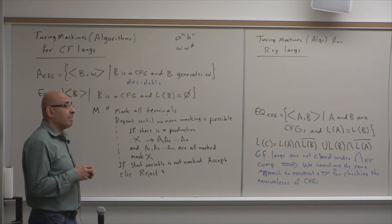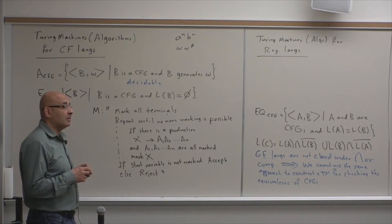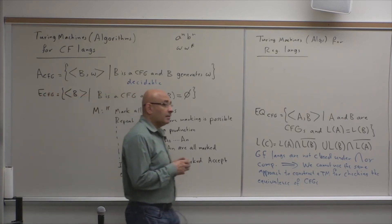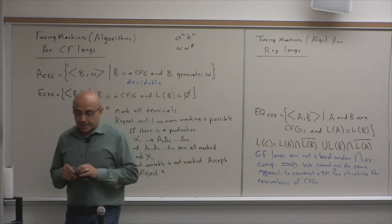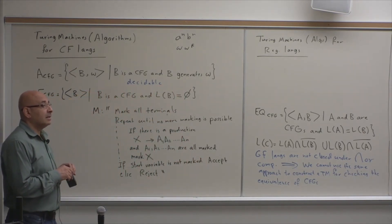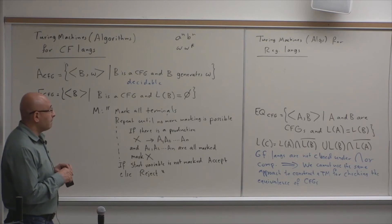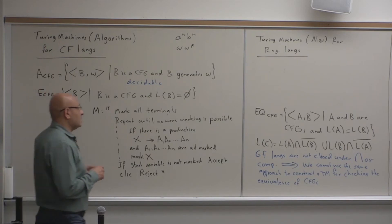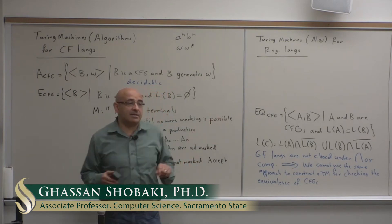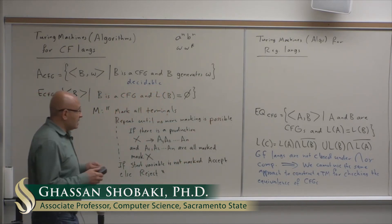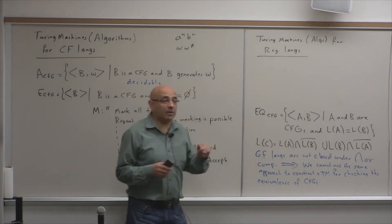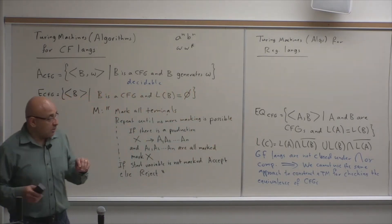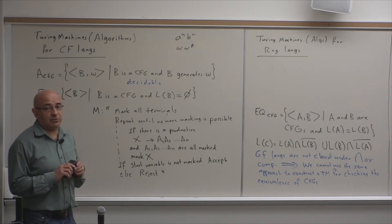When we say there's no algorithm — given the distinction between recognizability and decidability — this problem is not decidable. What we mean is that this problem is not a decidable problem, so there is no algorithm that is guaranteed to terminate within finite time.